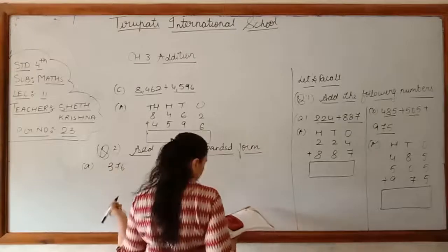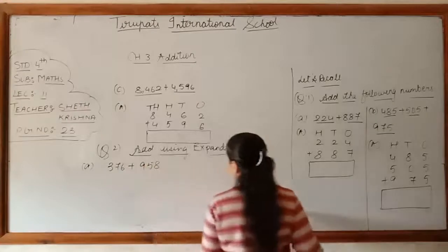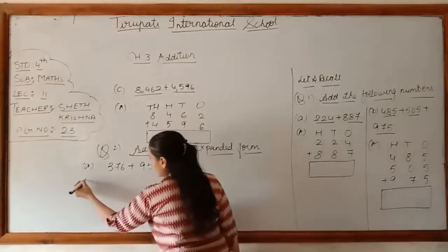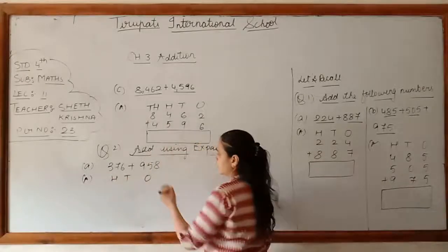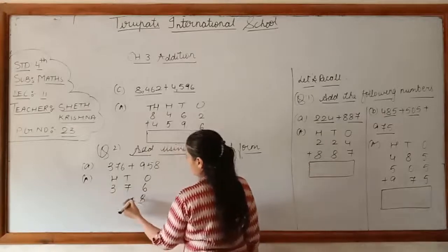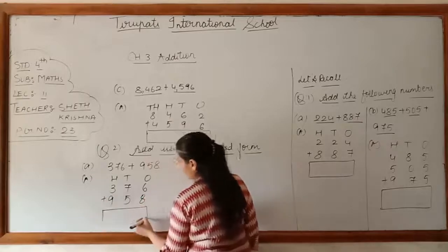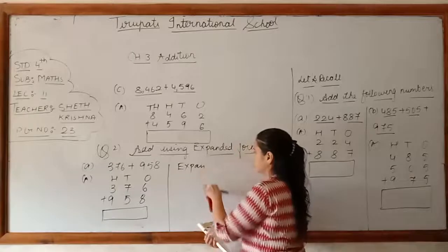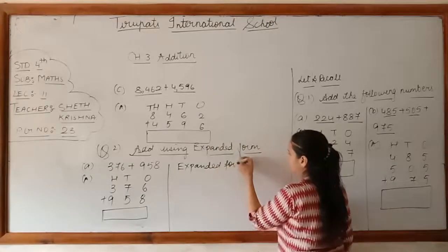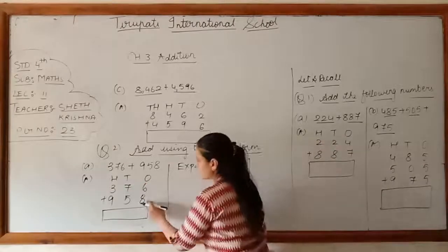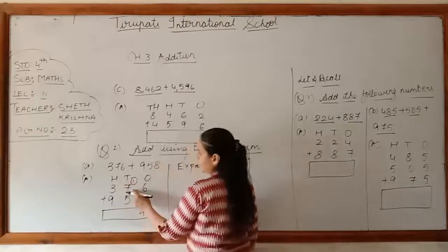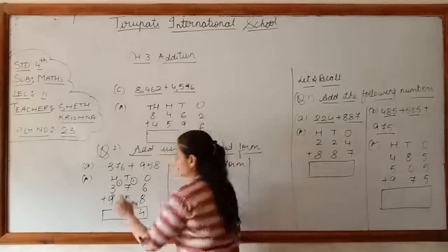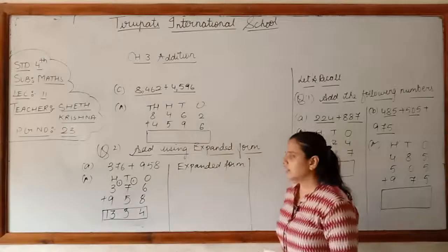We have studied this in third standard. 376 plus 958. First do the simple addition: write hundreds, tens, and ones, then write the digits — 6, 7, 3 and 8, 5, 9. Adding: 6 plus 8 = 14, 7 plus 1 = 8, 8 plus 5 = 13, 9 plus 3 = 12, 12 plus 1 = 13. The answer is 1,334.